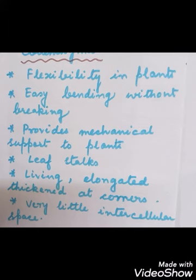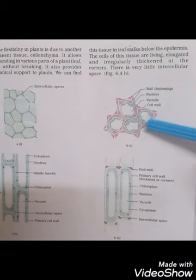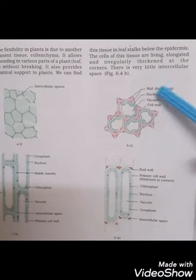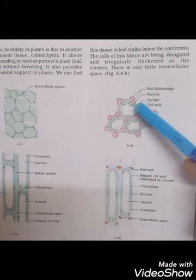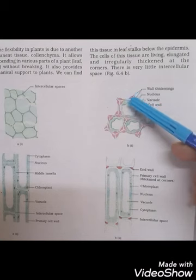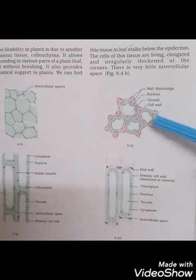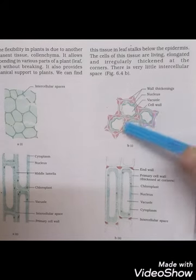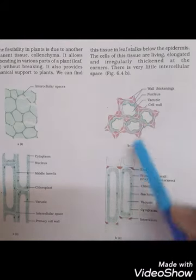In summary, collenchyma tissues are flexible, provide mechanical support, allow plants to bend easily, give strength and support, are living cells, and have very little intercellular space. Looking at figure B from the book, you can see the collenchyma tissues with thickened corners, a nucleus, a vacuole, and the cell wall. There is very little or no intercellular space between the cells.